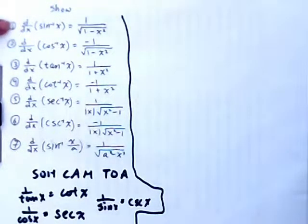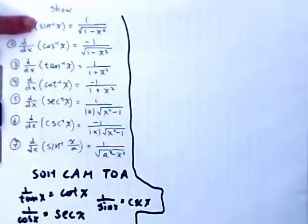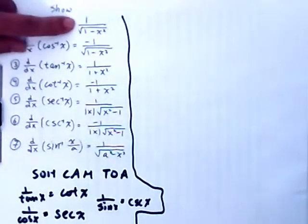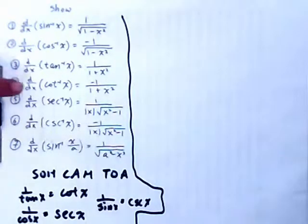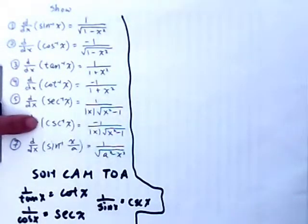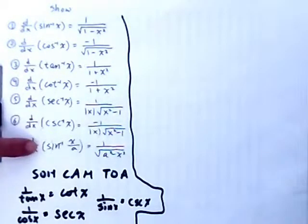First, we're going to show the derivative of the sine inverse is equal to 1 over the square root of 1 minus x squared, the derivative of cosine, tangent inverse, cotangent, secant, secant inverse, and cosecant inverse.